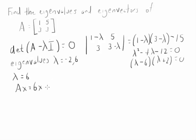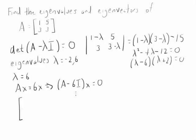That's the eigenvector eigenvalue equation, also written as A minus 6I times X equals 0. Let's rewrite that in matrix form. Here's A.